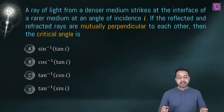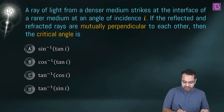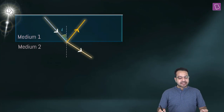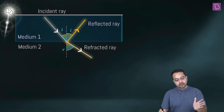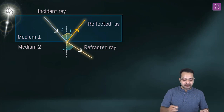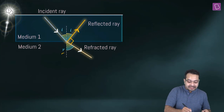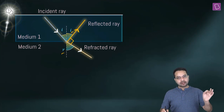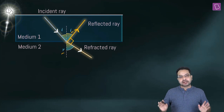A ray of light from a denser medium strikes the interface of a rarer medium at angle of incidence i. The reflected and refracted rays are mutually perpendicular. We need to find the critical angle. Light going from denser to rarer medium is refracted away from the normal, and the reflected ray and refracted ray make 90 degrees with each other.